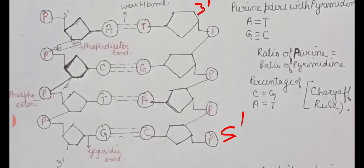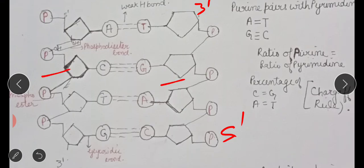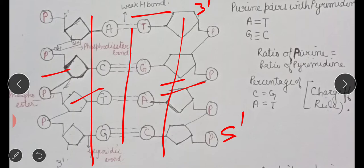The weak hydrogen bonds between A-T and G-C hold the two polynucleotide chains together and keep them in contact. Because of these hydrogen bonds between the bases, the two chains are slightly twisted — not straight — and they acquire a helical nature.